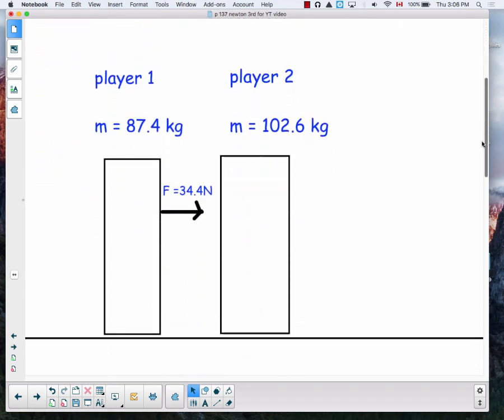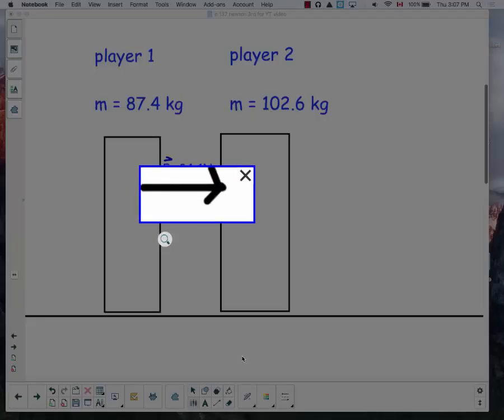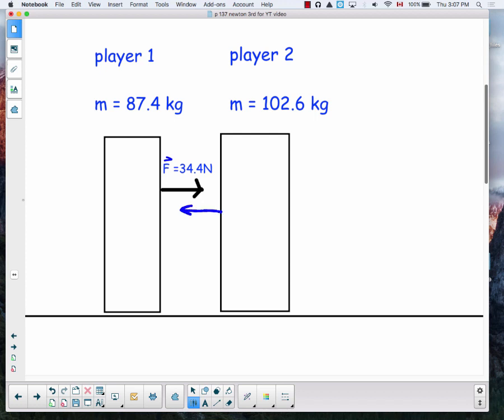So we've got a simple diagram showing here's player one, here's player two. Mass of player one is 87.4 kilograms, mass of player two is 102.6 kilograms, and this is representing the ice down below. So we have the force of our push, which is player one pushing on player two with a force of 34.4 newtons. What we need to realize is that this push right here of 34.4 newtons will have an equal and opposite reaction force from player two pushing back with 34.4. So when we go to do our free body diagram, even though player one is pushing on player two, the force on player one is due to the reaction force. So let's make our free body diagrams.